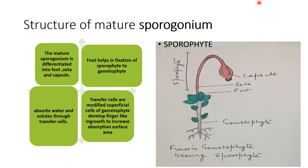This is the gametophyte of Funaria. It has a central axis attached to the substratum by means of rhizoids, and these are the leaves present on the main axis. At the tip the leaves are crowded. At this position the female sex organ, the archegonium, is present. This was discussed in the second video. After fertilization many archegonia are fertilized, but only one will develop into sporophyte.